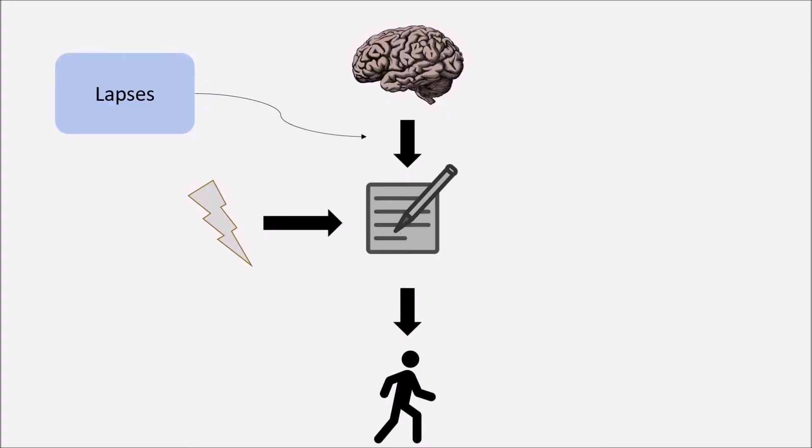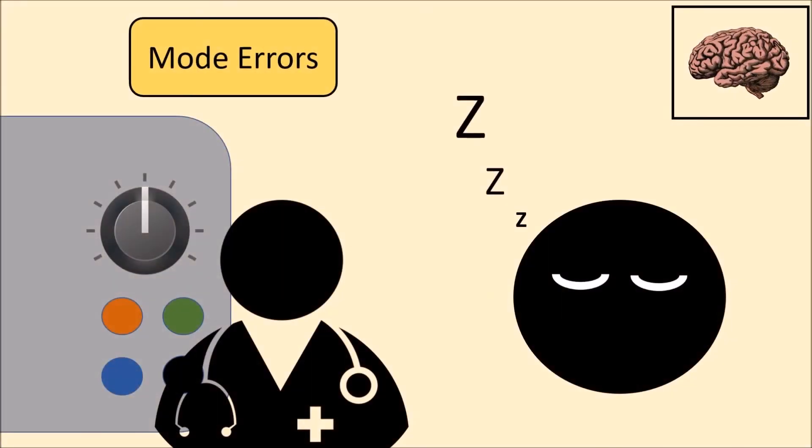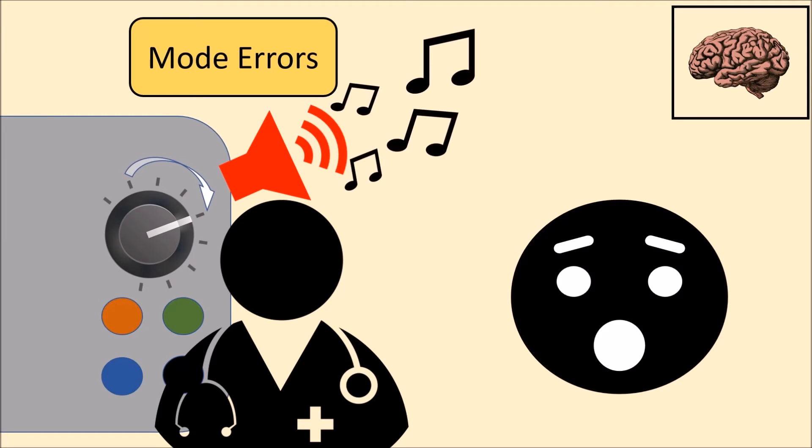The second error type in this category is the mode error, which is caused by performing an action in a system while it is mistakenly set to another mode. For example, if a doctor is turning a knob on a machine and instead of the patient getting drowsy, a loud alarm is triggered since the machine was operated in the wrong mode.